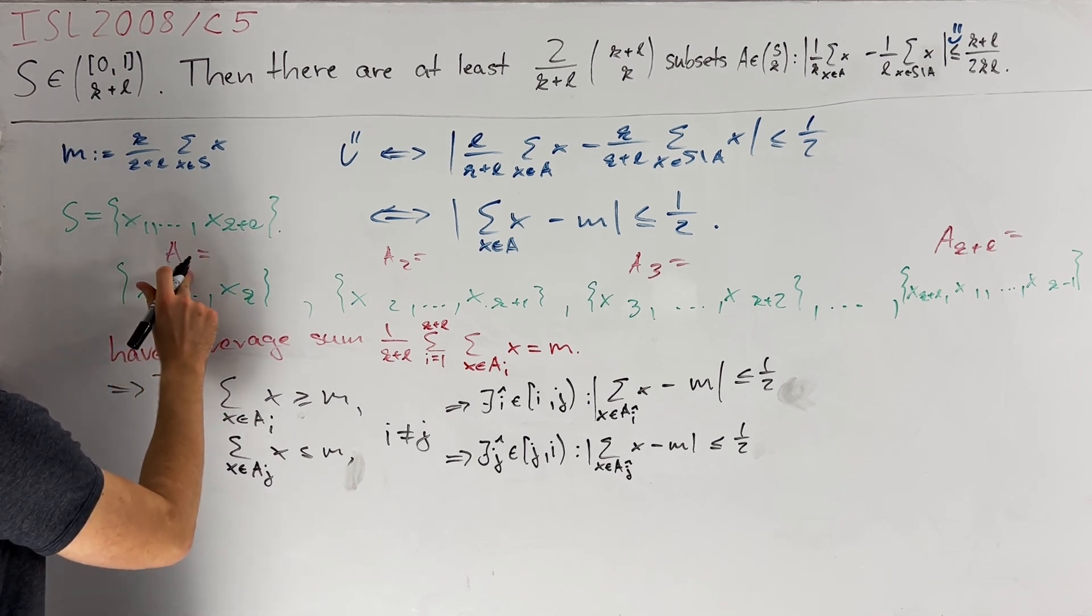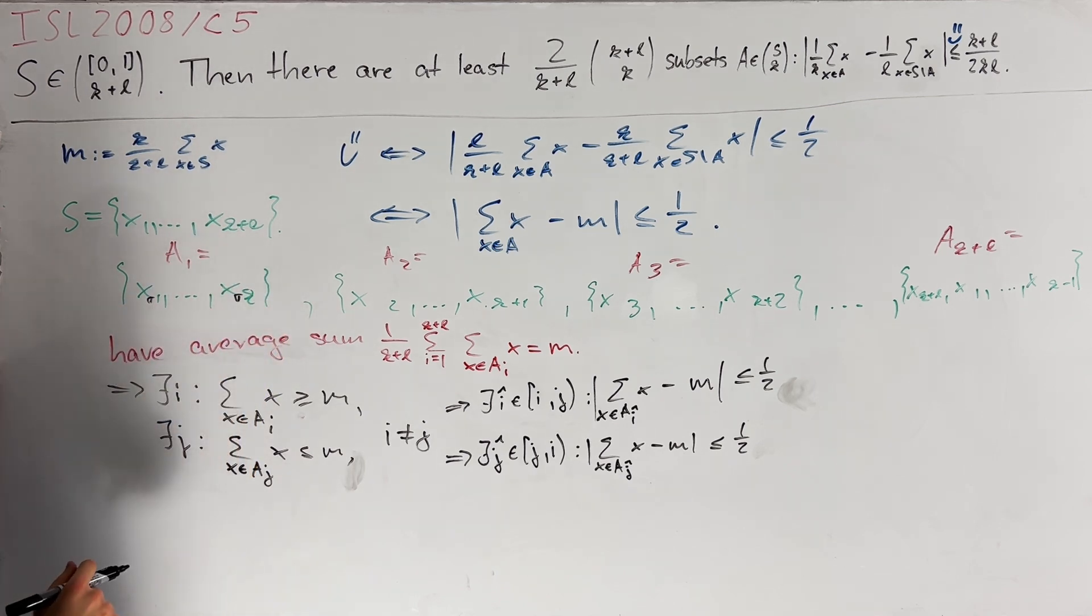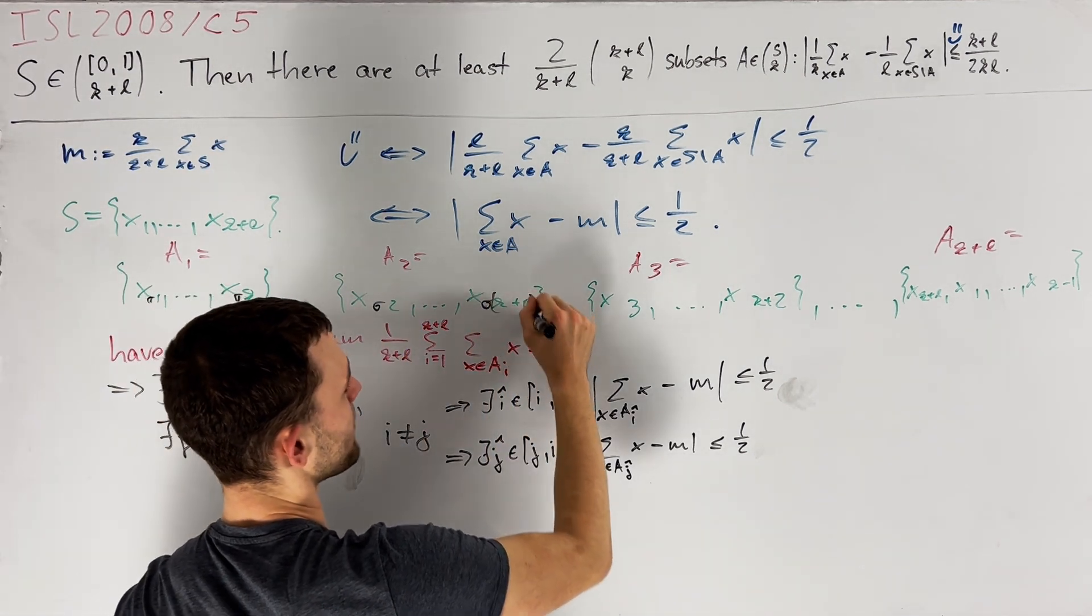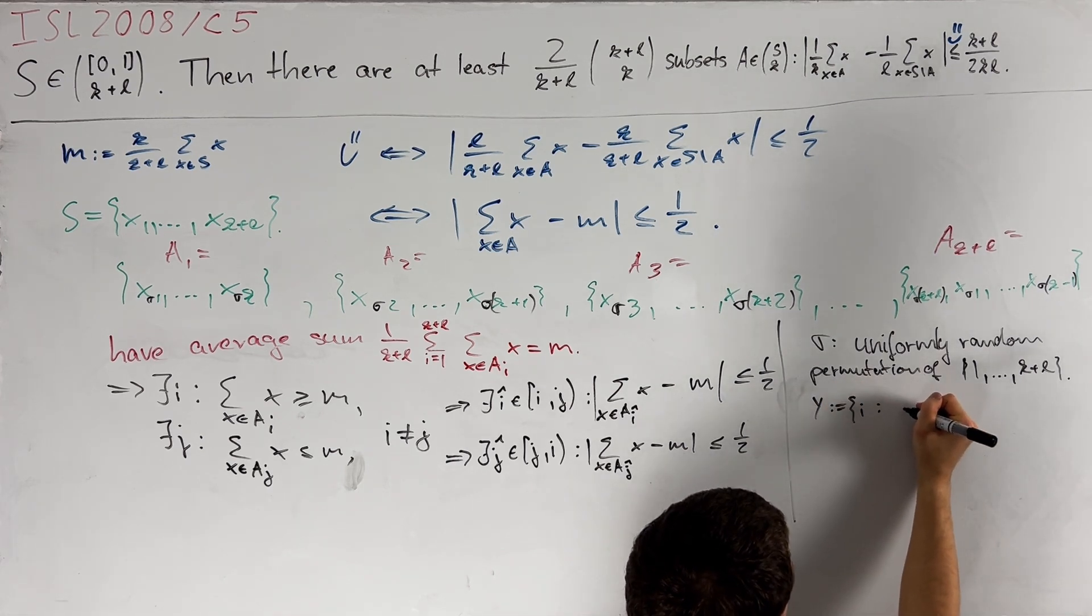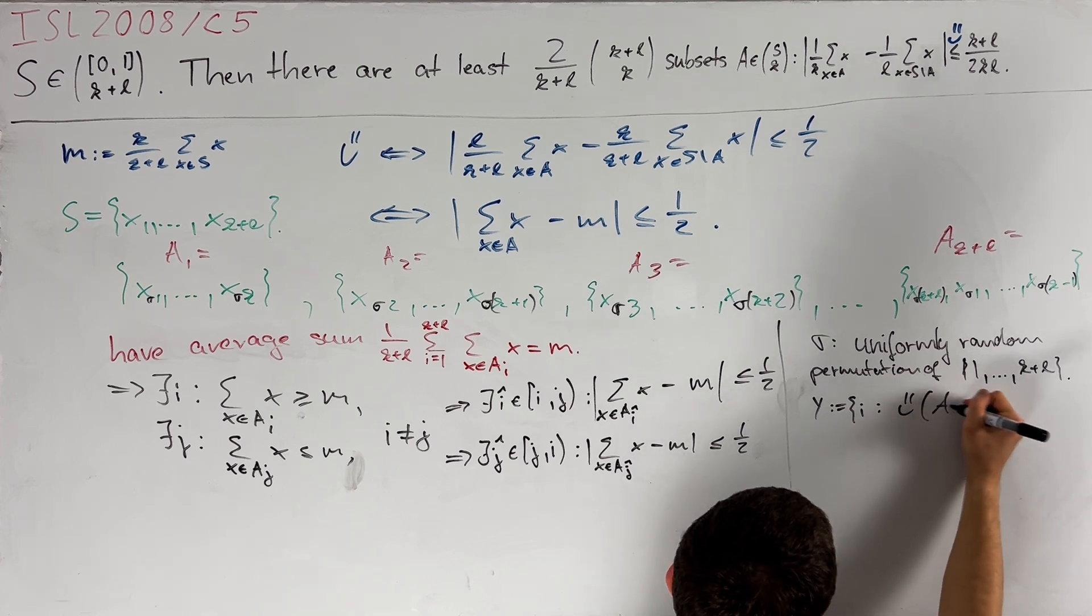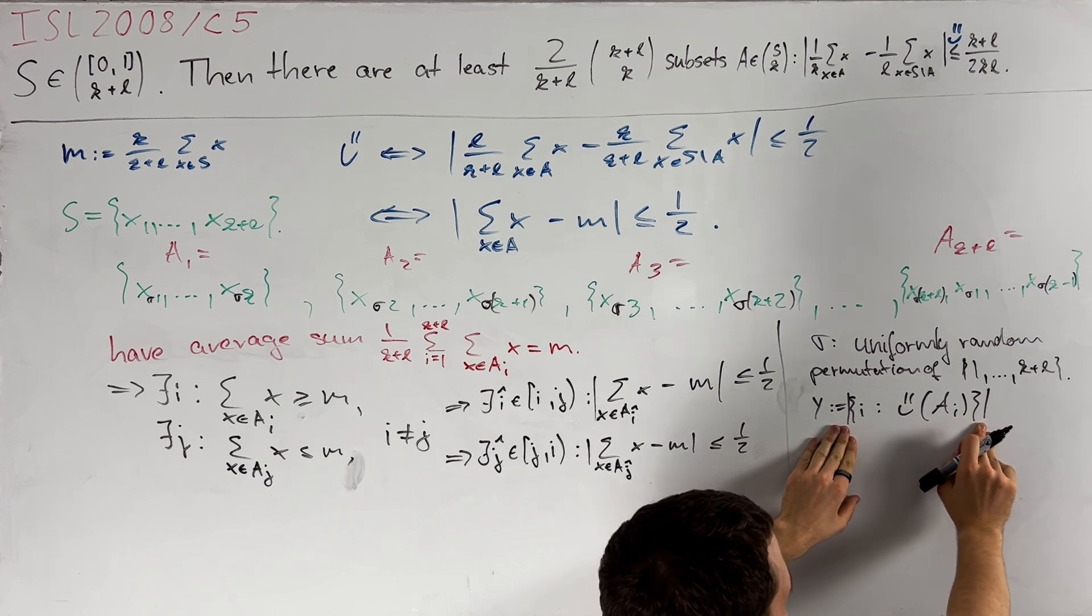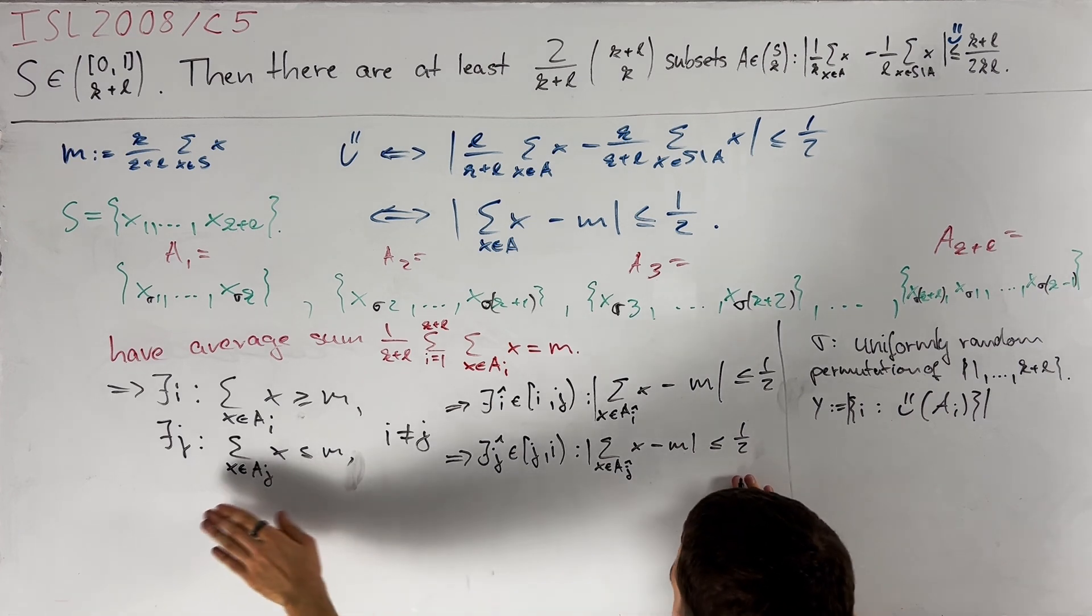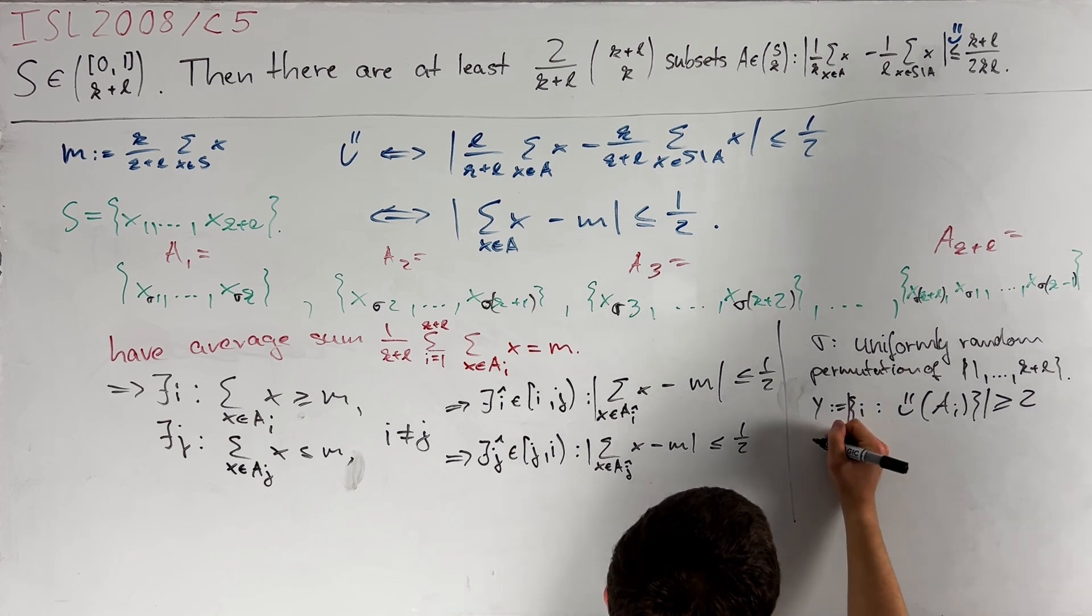So let us introduce a uniformly random permutation sigma of the set of 1 up to K plus L. Then we define a1 as the random set containing X sigma 1 all the way up to X sigma K. Similarly, we can define a2 and a3 and so on. Furthermore, let us define y as the number of indices such that Smiley is satisfied by ai. Then y is only dependent on sigma as a random variable and for any given choice of sigma y is greater than or equal to 2 as established here, so the expectation of y is also greater than or equal to 2.